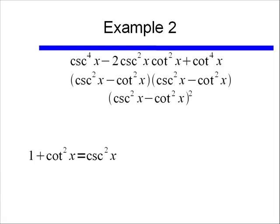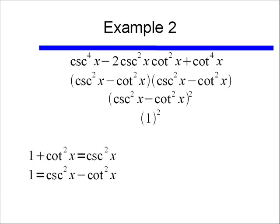So if I take that, is there anything I can do to manipulate this equation, so I can get one side of the equation equaling cosecant squared x minus cotangent squared x. Well I think I can. If I take this equation and subtract from both sides cotangent squared x, then I get my phrase. I have cosecant squared x minus cotangent squared x, and that's just equal to 1. So if I go ahead and substitute 1 for my cosecant squared x minus cotangent squared x, I have 1 squared, or just 1.